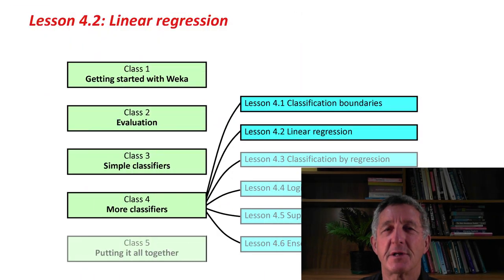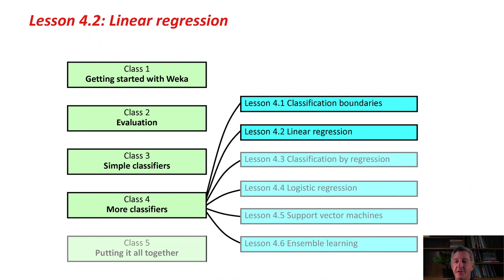A classification problem is when what you're trying to predict is a nominal value, whereas in a regression problem, what you're trying to predict is a numeric value. We've seen examples of datasets with nominal and numeric attributes before, but we've never looked at the problem of regression, of trying to predict a numeric value as the output of a machine learning scheme. So that's what we're doing in this class, Linear Regression.